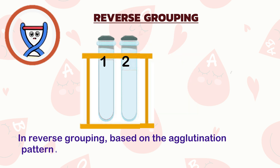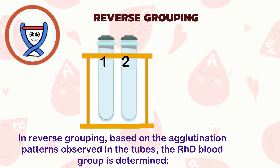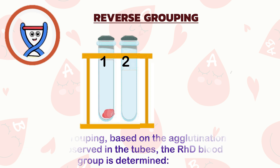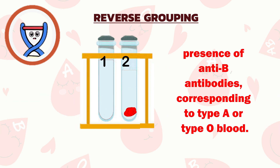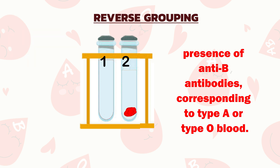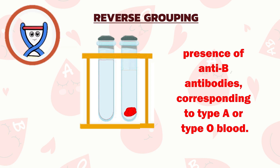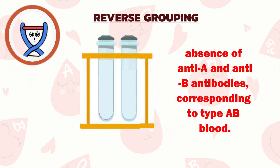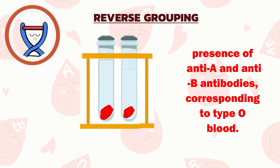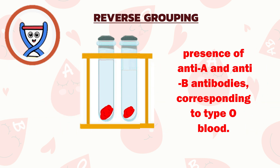In reverse grouping, agglutination in tube 1 indicates the presence of anti-A antibodies, corresponding to type B or type O blood. Agglutination in tube 2 indicates anti-B antibodies, corresponding to type A or type O blood. Absence of agglutination in both tubes indicates type AB blood. Agglutination in both tubes indicates the presence of anti-A and anti-B antibodies, corresponding to type O blood. Agglutination in tube 3 could indicate the presence of alloantibodies.